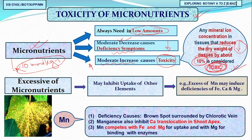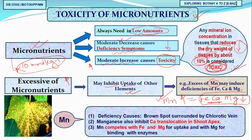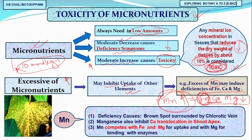An interesting feature of micronutrient toxicity is that excess of one micronutrient can inhibit the uptake of other elements. For example, if manganese (Mn) concentration is increased moderately, it will induce deficiency of iron (Fe), potassium (K), and magnesium (Mg). So you may observe iron-deficiency symptoms even though iron is present, simply because excess Mn is blocking its absorption.